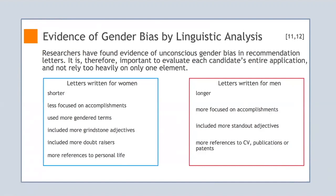In contrast, the letters for the male applicants included more standout adjectives such as excellent, superb, outstanding, or unique. This finding suggests that women's success is more often associated with effort while men's success is associated with ability. The letters written for the female applicants also included more doubt-raising phrases and were significantly more likely to have references to the applicant's personal life. In contrast, the letters written for the male applicants were more likely to reference their CVs, publications, or patents. It is therefore important to evaluate each candidate's entire application and not rely too heavily on only one element.